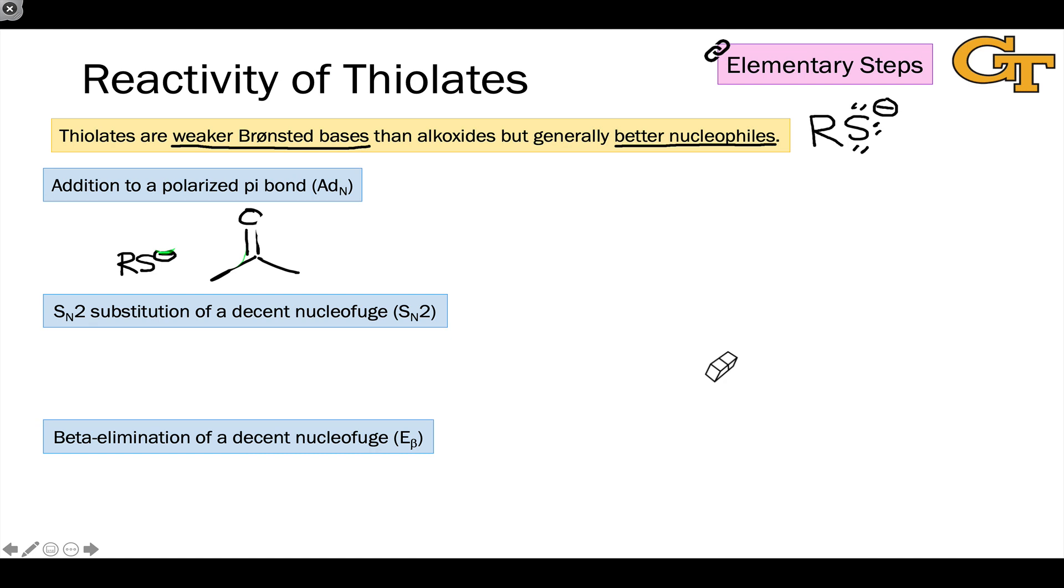For example, an anionic thiolate can add to a polarized pi bond, such as we find in a carbonyl compound, through an AD sub N, or nucleophilic addition elementary step.